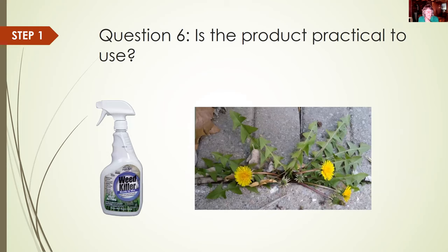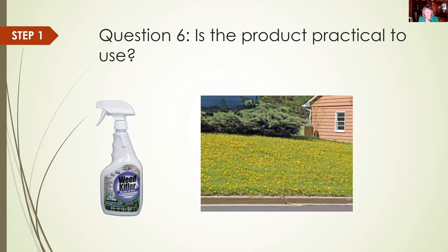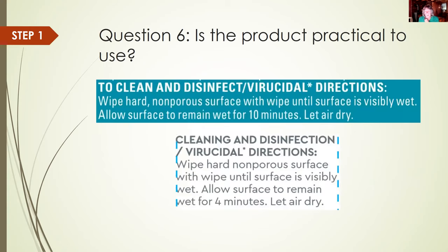Is the product practical to use? A handheld pump spray bottle of weed killer would be great for weeds that pop up in cracks in the sidewalk or patio — not the option of choice if you're doing a whole lawn treatment. And while we've all been busy using disinfectant wipes in the past year, hopefully you've looked at the label and noticed that a quick wipe of a doorknob won't kill a virus. The surface has to remain wet for a certain amount of time. Looking at two products, one might be more practical because you only have to leave the surface wet for four minutes.